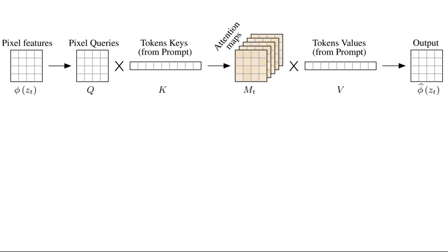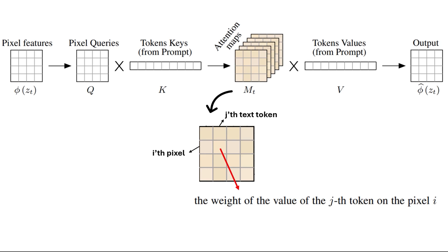What we should care about most is the cross attention maps where the rows represent the pixel values and columns represent the text tokens. Each entry for pixel i and text token j represents the weight of the value of the j-th token on pixel i. When we look at the final output from one view, it is nothing but a weighted average of these text tokens in a way that the weights are coming from the attention maps.